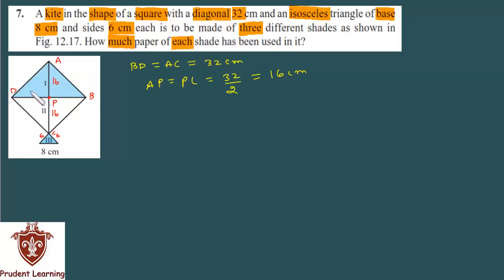Now, diagonal BD divides the square into 2 congruent triangles. The upper triangle ABD is shaded in blue — that is shaded part 1 (Roman numeral I). The lower triangle BDC is shaded in white — that is shaded part 2 (Roman numeral II). The small isosceles triangle at the tail is the 3rd part. So we need to find the area of all 3 parts.